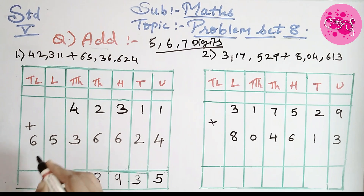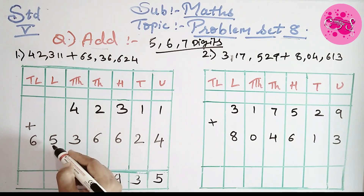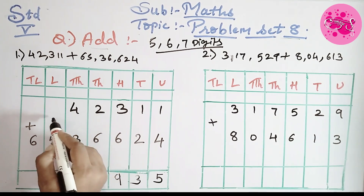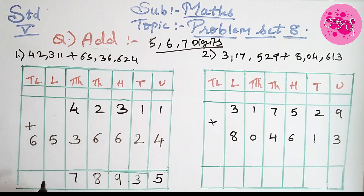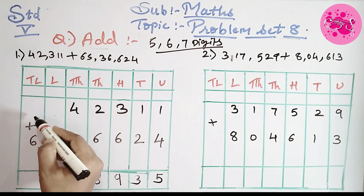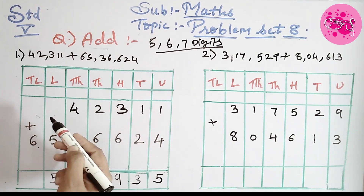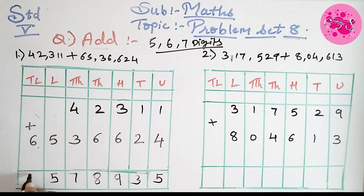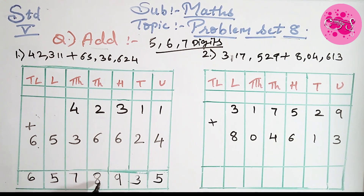Here, before 5 there is no number, so write only 5. Same with 6 — before 6 no numbers are there, so write number 6 as it is. So we got the total number is 65,07,935.